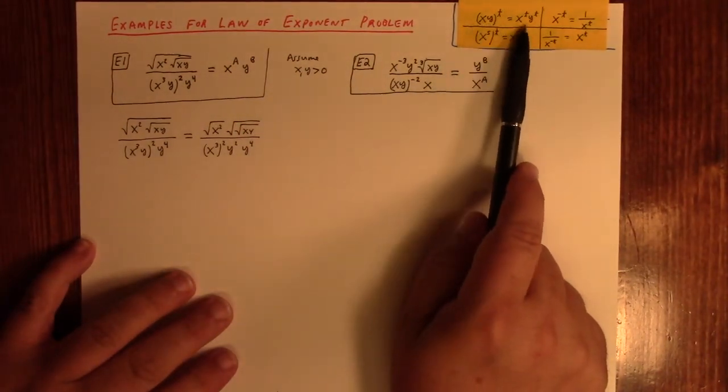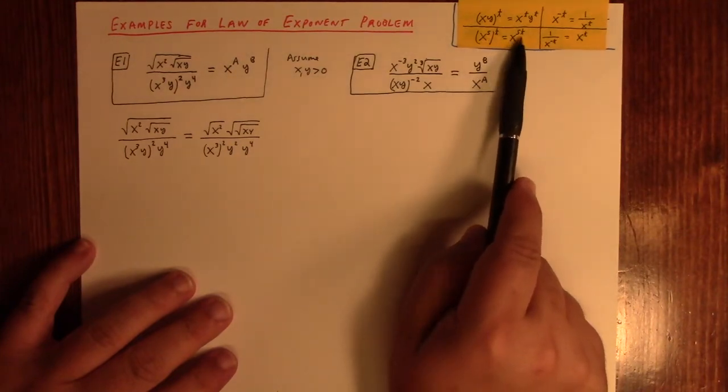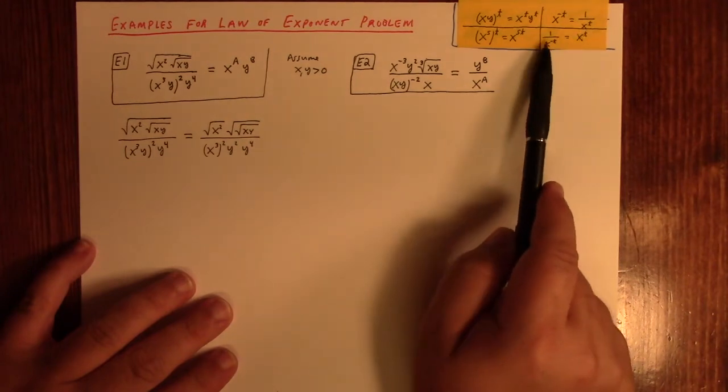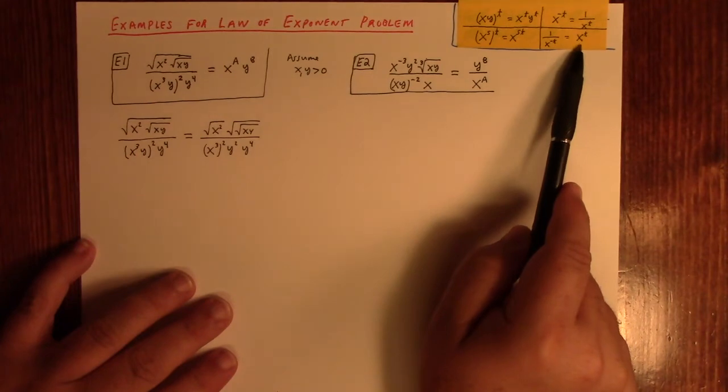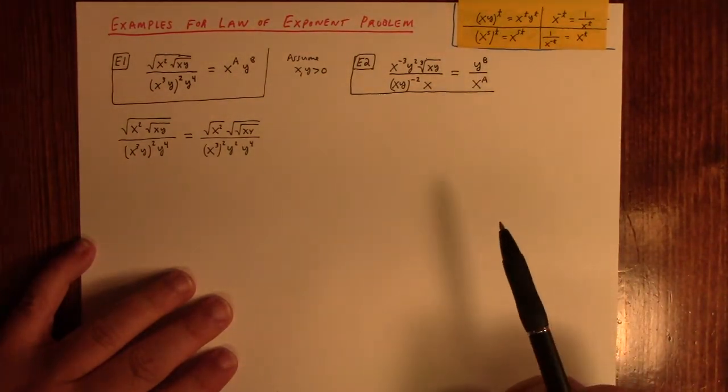You know, x, y to the t is x to the t, y to the t, or x to the s to the t is x to the st, or if we've got a negative exponent, we can rewrite it as a positive exponent of the denominator. If we've got a negative exponent in the denominator, we can rewrite it as a positive exponent in the numerator. These are the tools of the trade here primarily.